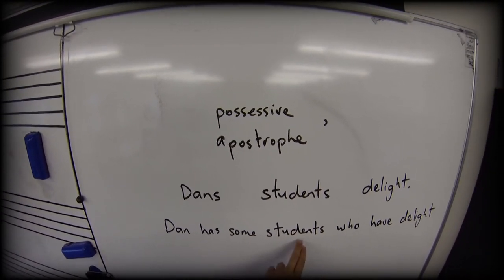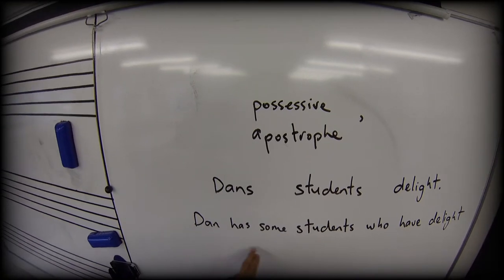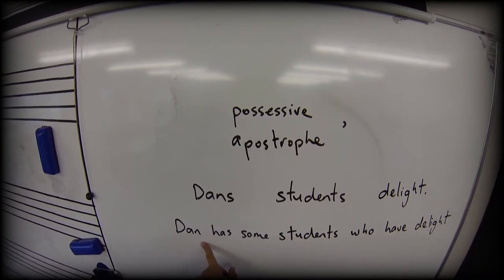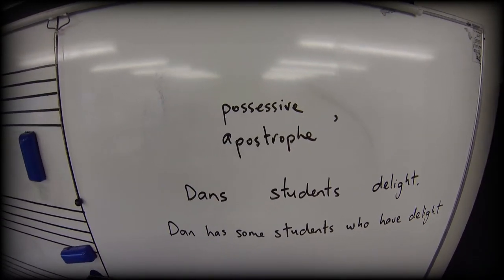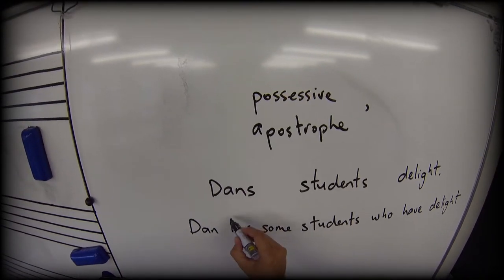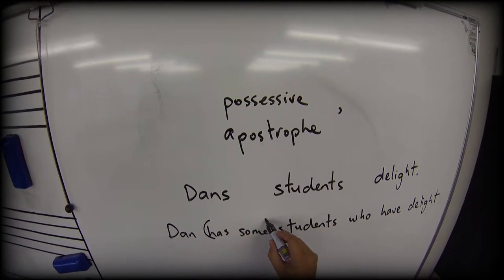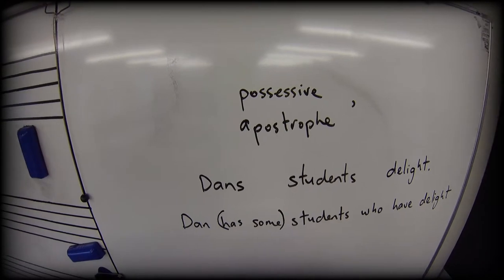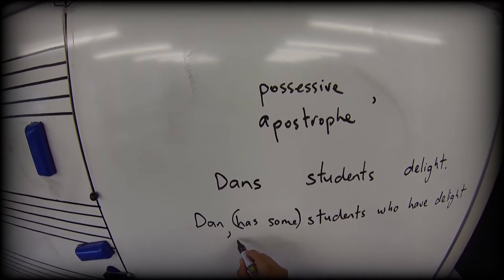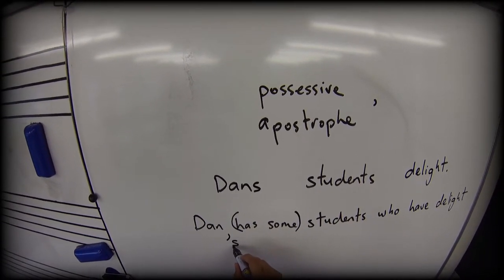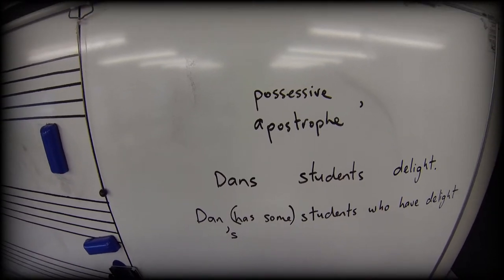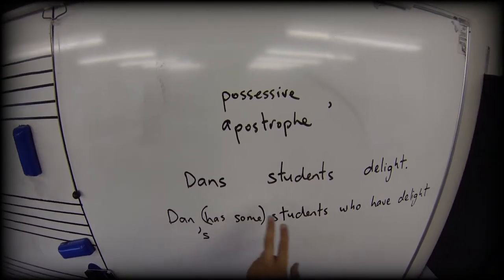So I can talk about Dan's students. What I actually do is I replace the idea of 'has some' with an apostrophe and an S. So I talk about Dan's students.